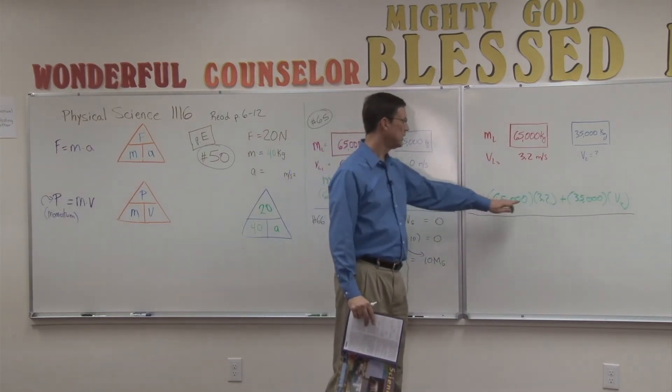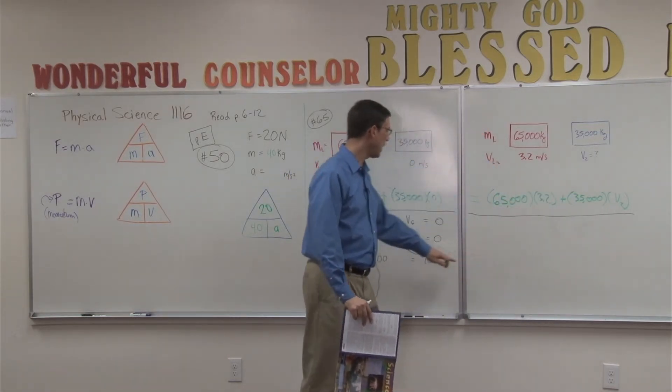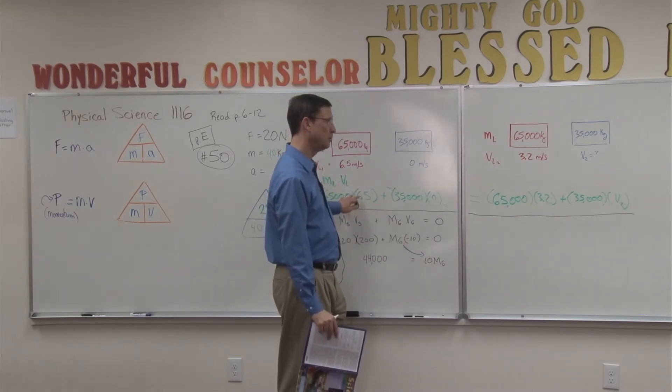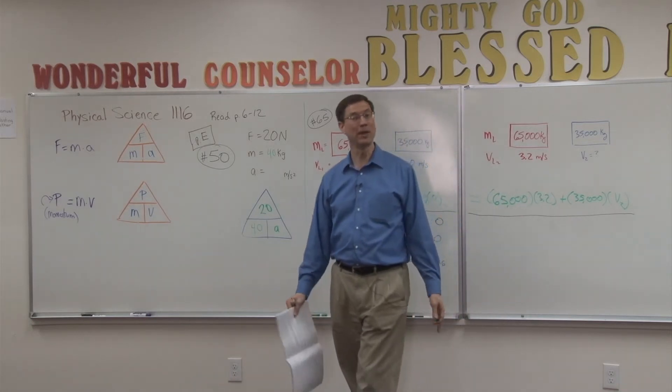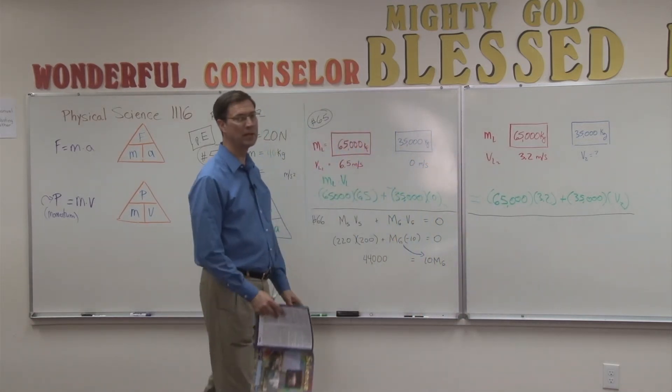To finish the problem, you're going to take that answer, subtract it from both sides of the equation, which will make this number smaller, and then the last step is to divide by the 35,000, and you'll know what the velocity of that car was.